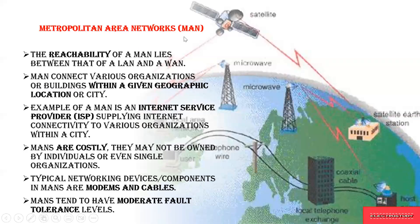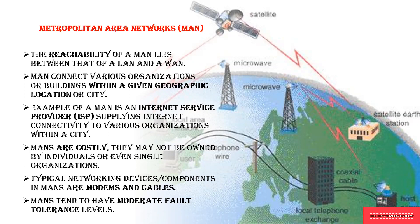Next is Metropolitan Area Network. MAN uses a large geographical area but will work only where access is required. As shown in the picture, it accesses only particular things within a geographical area. The reachability of MAN falls between LAN and WAN — it acts as a node between a LAN and a WAN. MAN connects various organizations and buildings within some geographical location for data access.